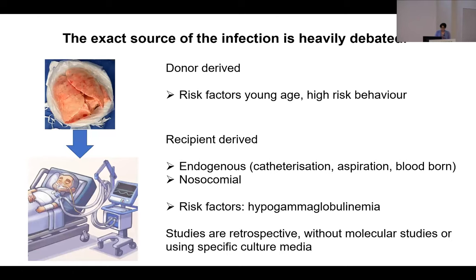The exact source of this infection in the post-lung transplant setting is heavily debated. There are data suggesting it comes from the donor — these donors have organism colonisation in the upper respiratory tract, and during intubation and aspiration it can enter the donor lungs. There's also a theory that genitourinary tract colonisation can enter the bloodstream during catheterisation or other invasive procedures and contaminate the donor lungs. Donor risk factors such as being young or having high-risk behaviours explain greater colonisation in the genitourinary and upper respiratory tracts.